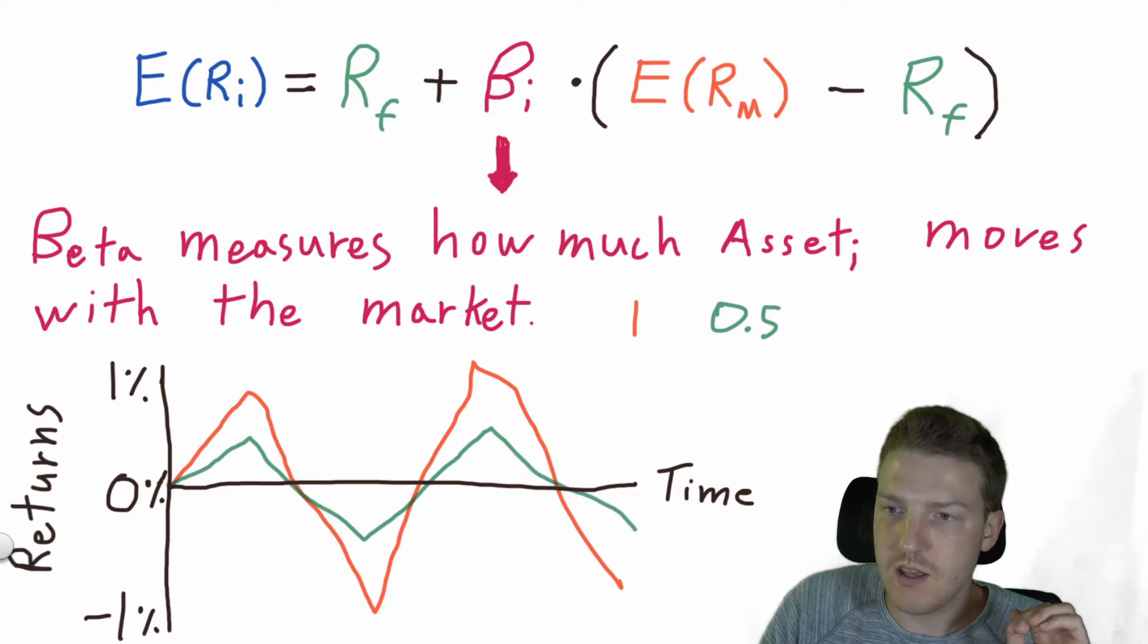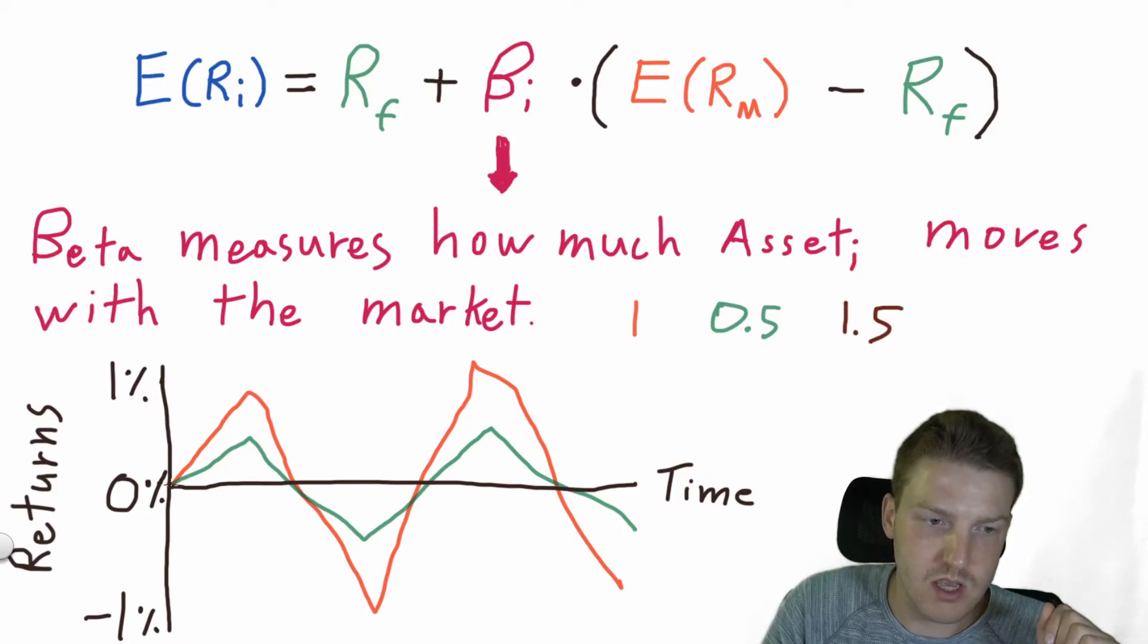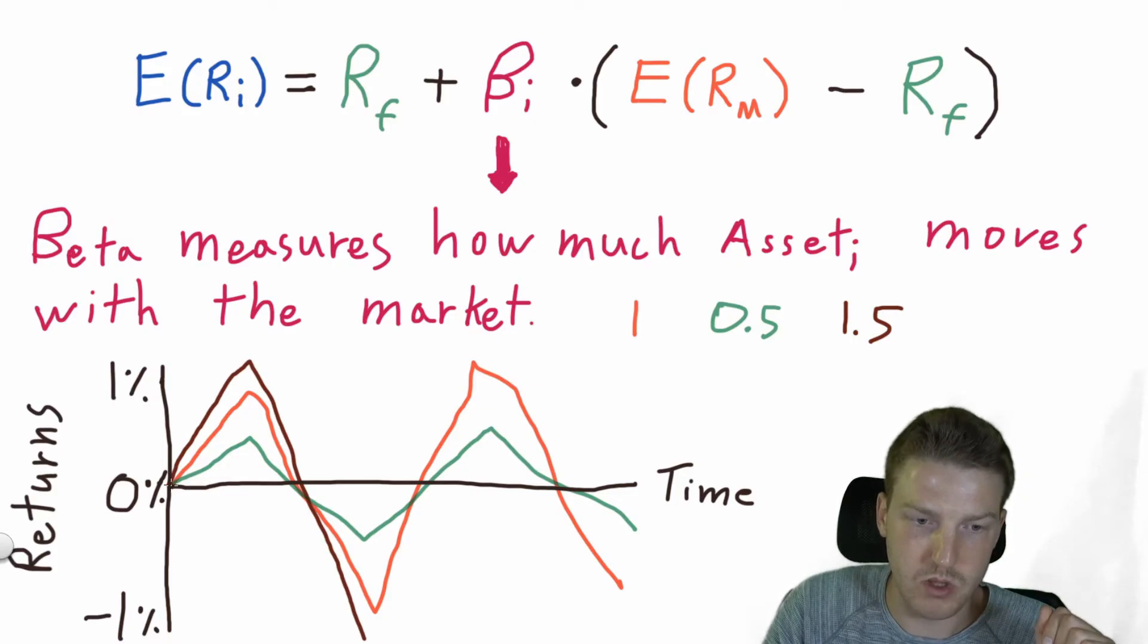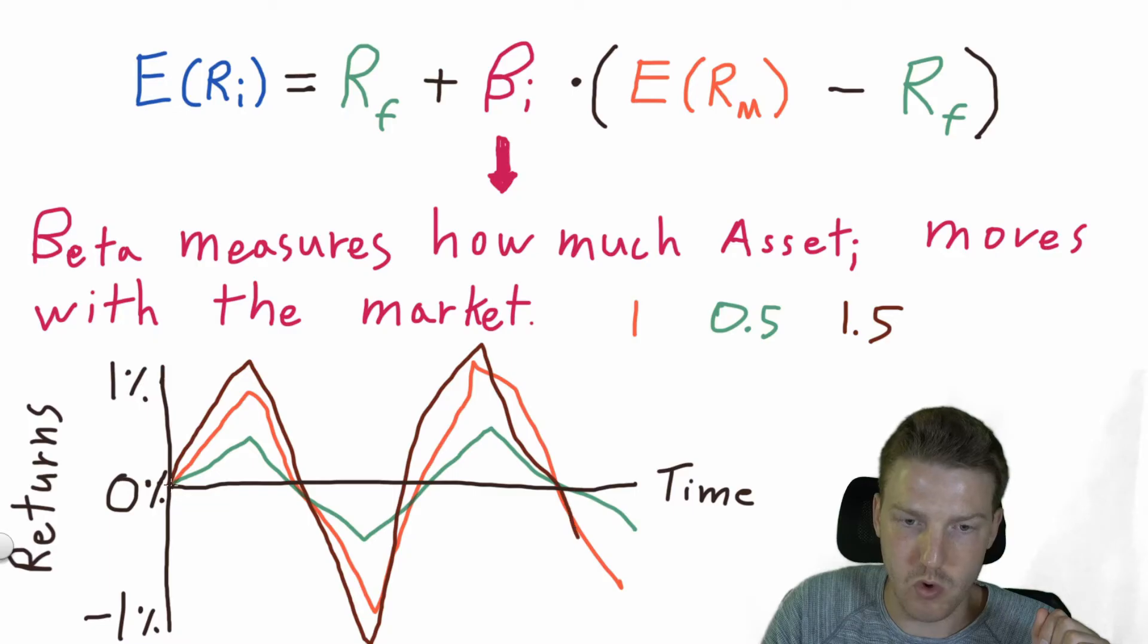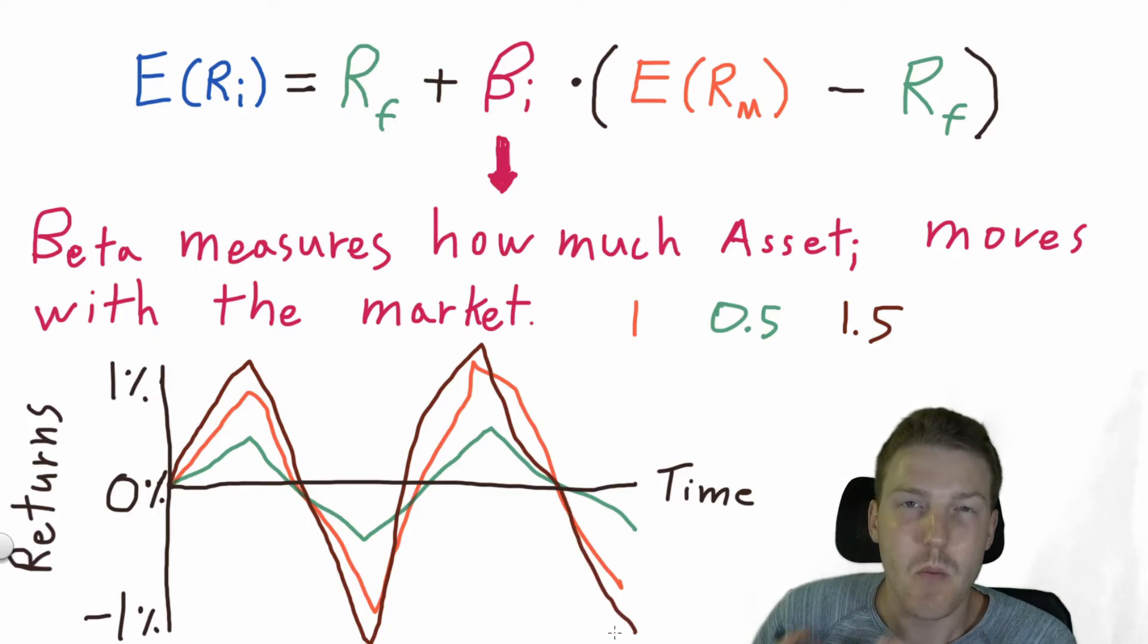But let's say that instead this asset, asset I, has a beta of 1.5 approximately. You'll see it goes up by more than the market when the market goes up, but then it goes down by more than the market when the market goes down in price. And back up, it goes up by more than the market, and then back down, it goes down by more than the market. So with the beta above one, an asset has more risk than the market itself.